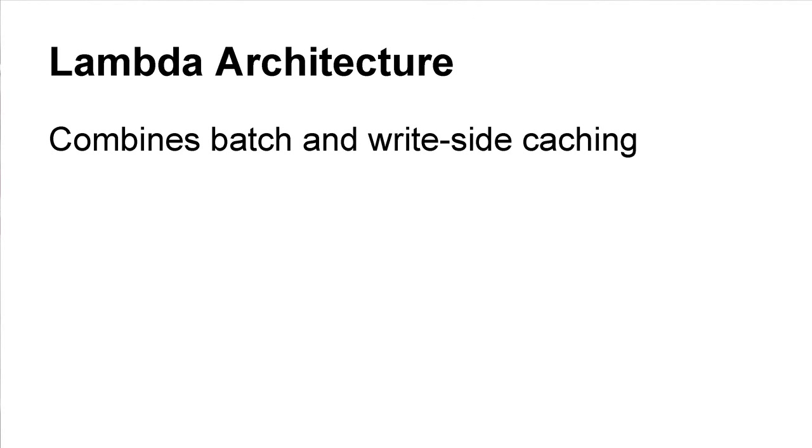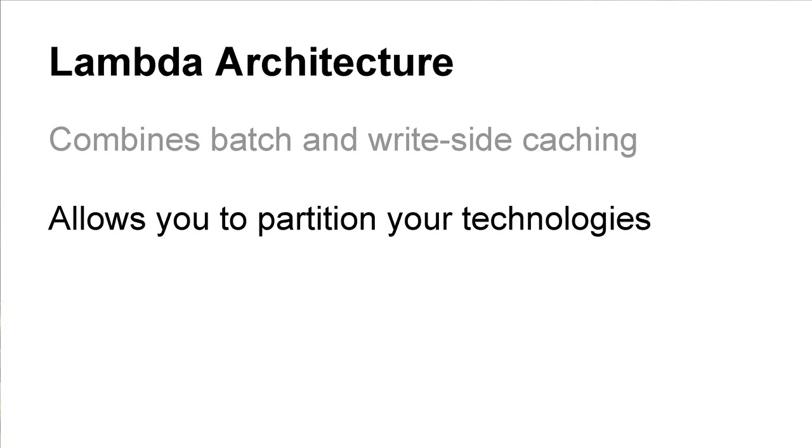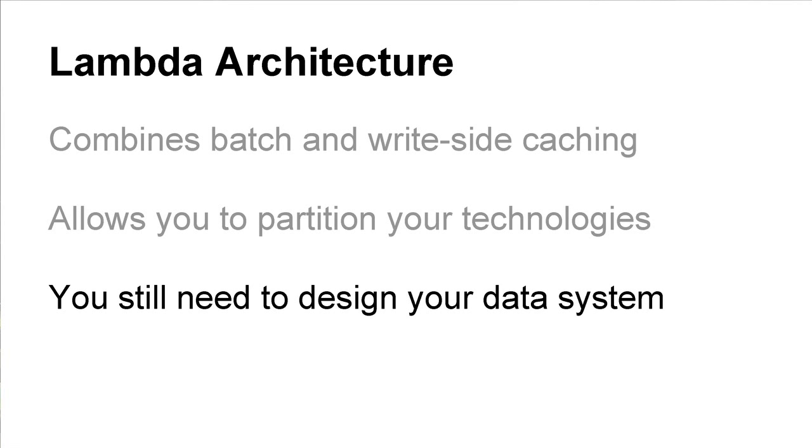To summarize: Lambda architecture combines just two types of caching — that's all it really is, an elegant use of caching. It combines batch-side caching, where you recompute the whole universe and push that out, as well as right-side caching, where every change to your data updates your cache. This allows you to partition your technologies — on the speed side you can use interesting technologies, and the batch side is more prescribed. But you still need to design your data system: think about your business requirements and the trade-offs you want to make. It's a nice template to build on.